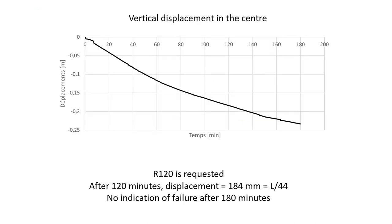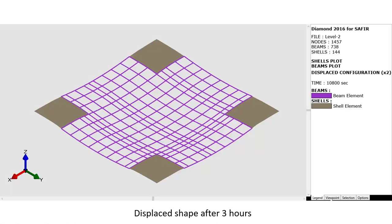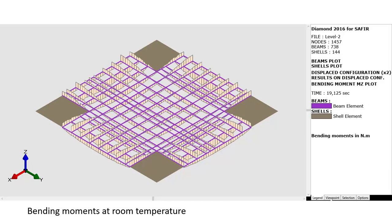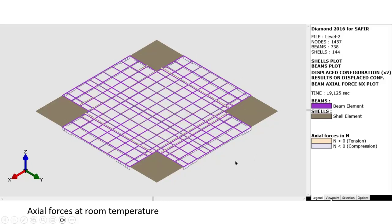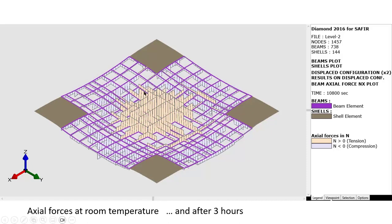This is the result of the simulation which we stopped after three hours, where a requirement of two hours was in that zone. We had after two hours a displacement of L over 44, so no indication of failure. This is the displaced shape of the slab after three hours, where you can see a double curvature. This is the bending moment distribution in the ribs, where you can see hogging, sagging, hogging as you would expect. But in the fire situation after three hours, the bending moment distribution is different. We have essentially hogging all over the place. These are the axial forces in the ribs, quite low at room temperature. But after three hours, we see some kind of tensile membrane action developing in the center, with compression around this central zone.